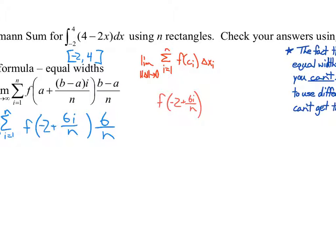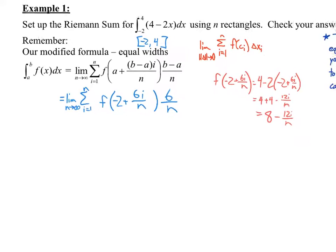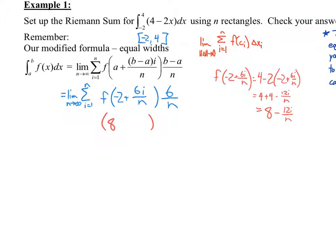So, let's go ahead and find out what is f of negative 2 plus 6i over n. Well, the function is 4 minus 2x, so I'm going to do 4 minus 2 times negative 2 plus 6i over n. So, we have 4 plus 4 minus 12i over n. So, that, of course, is 8 minus 12i over n. So, now I can come back here. And right here, I've got an 8 minus 12i over n. That's times 6 over n. And that's what I'm taking the limit of the sum of.